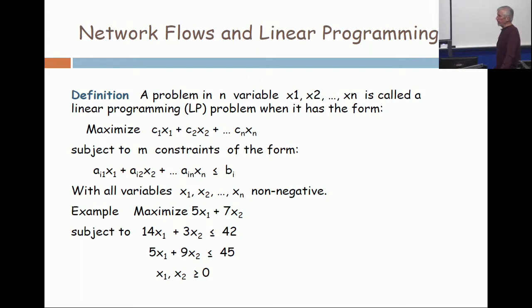Now, here's a simple instance. Maximize 5x1 plus 7x2, subject to these constraints: 14x1 plus 3x2 less than or equal to 42, 5x1 plus 9x2 less than or equal to 45, and x1 and x2 greater than or equal to zero.